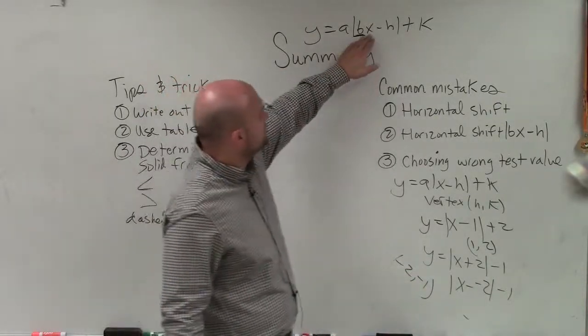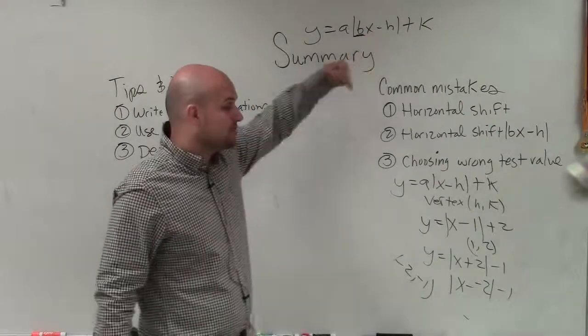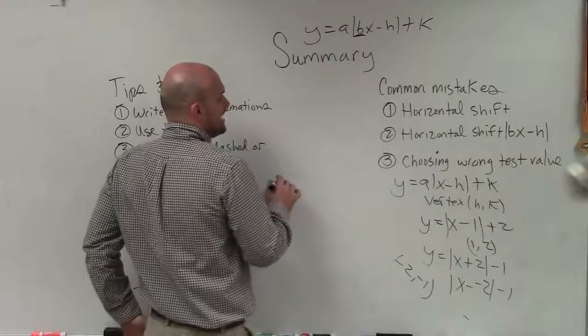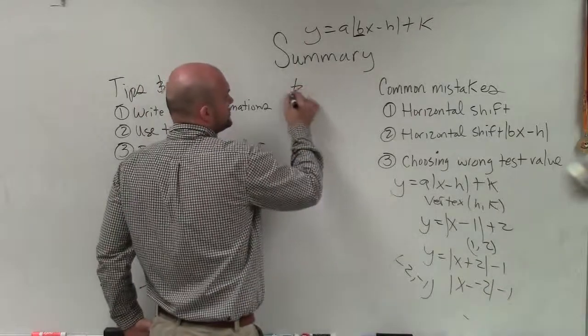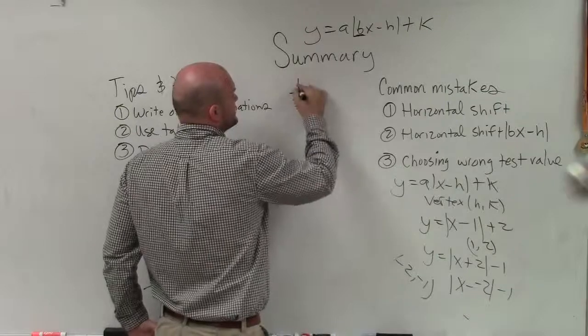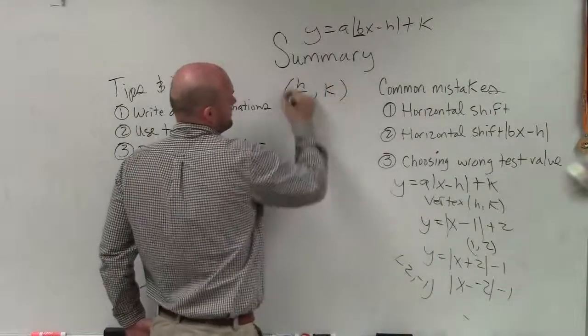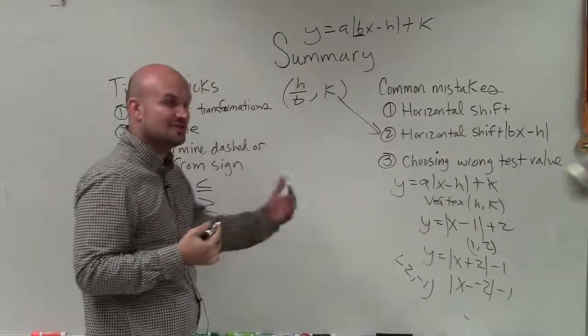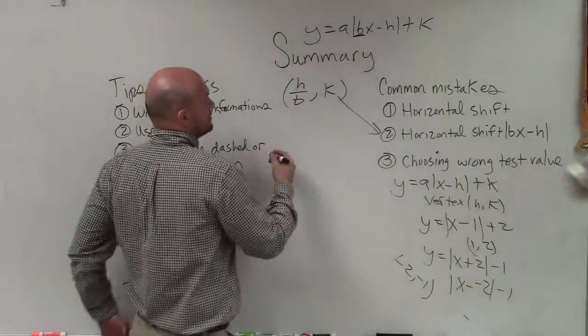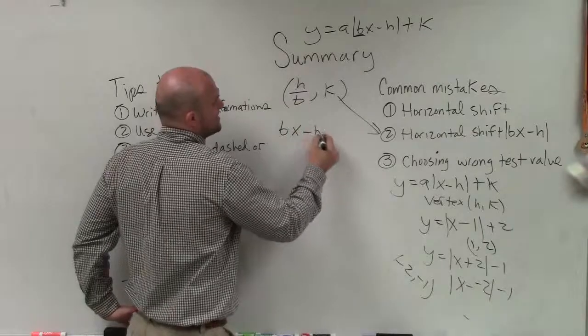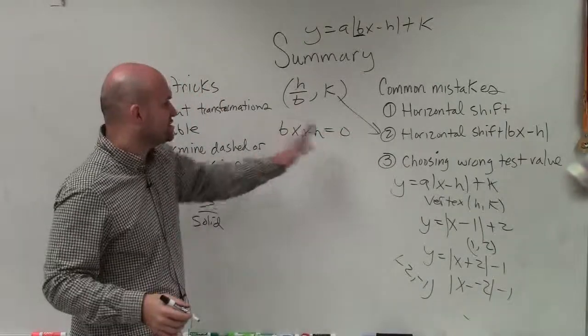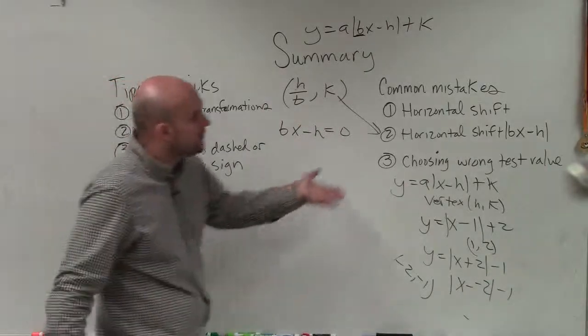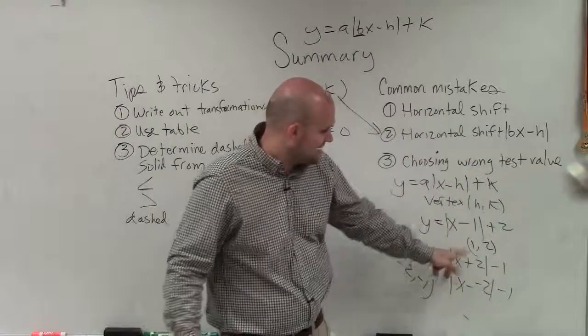So when you have a value for b in there, you've got to understand the transformations are going to change. So instead of it just being h and k, it's now going to be h over b comma k. That's going to be your new vertex. So that b affects my transformation, shifting it left or right. The other way you can look at it is just take whatever is inside of your absolute value inequality sign, and then solve it for 0 for x. Whatever that value of x is, that's your new x-coordinate of your vertex, which we identify as h.